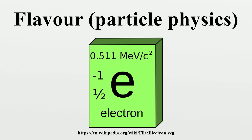Thus any flavor carried by a charged meson has the same sign as its charge. Quarks have the following flavor quantum numbers: Isospin, less ambiguously known as isosbaric spin, which has value I3 equals one-half for the up-quark and I3 equals minus one-half for the down-quark. Strangeness: defined as S equals minus(n_s − n_s-bar), where n_s represents the number of strange quarks and n_s-bar represents the number of strange antiquarks.